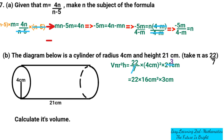So I'm going to find the value of 22 multiplied by 16 cm squared, which will give us 356 cm squared, multiplied by 3. Then when we multiply that, it's going to give us 1056 cm cubed.